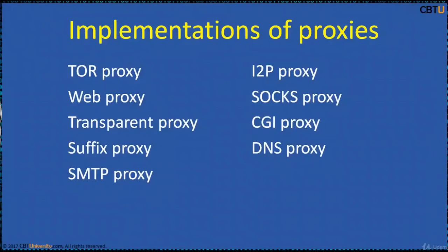A DNS proxy takes DNS queries and forwards them to an internet domain name server; it may also cache DNS records. SMTP proxies are specialized mail transfer agents (MTAs) that simulate other types of proxy servers and pass SMTP sessions through other MTAs without using the store-and-forward approach of a typical MTA.